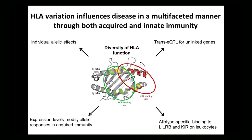It's this region of the peptide binding groove that KIR receptors recognize. They see this region and they can send activating or inhibitory signals to NK cells, for example, and affect the innate immune response. So it's not just the acquired immune response, it's also the innate immune response. And more recently, the example I'll give today is differential expression levels, which we think is having an effect modifying the effect of alleles on different disease outcomes.